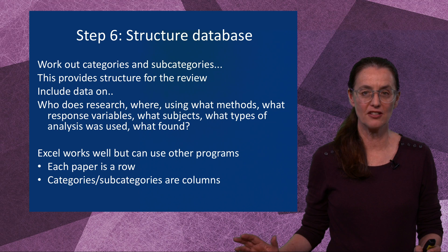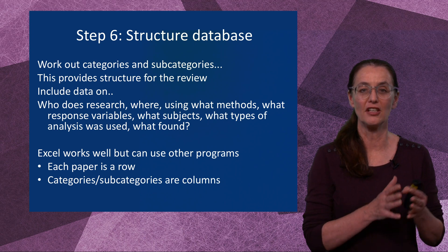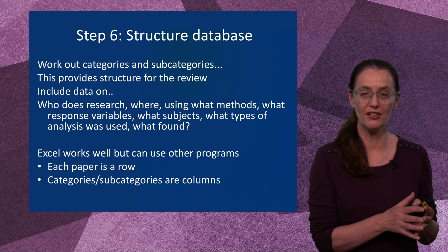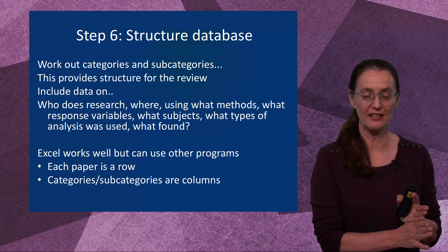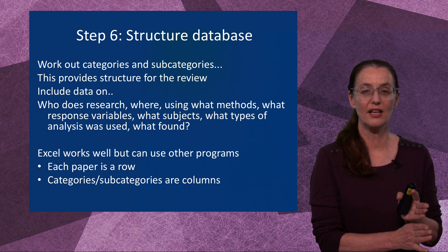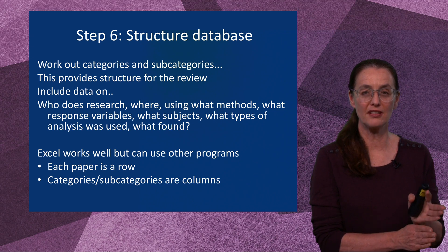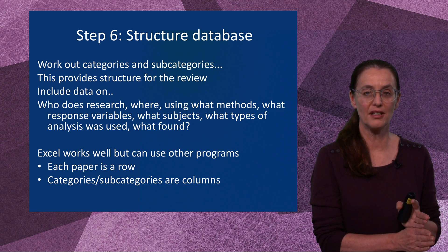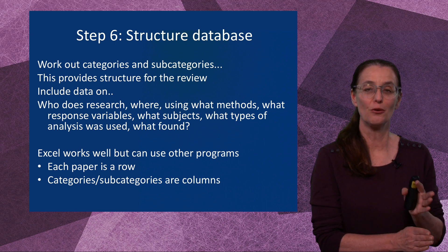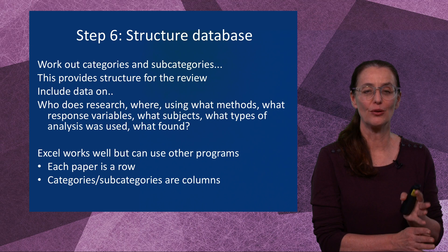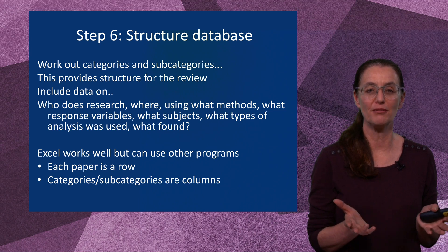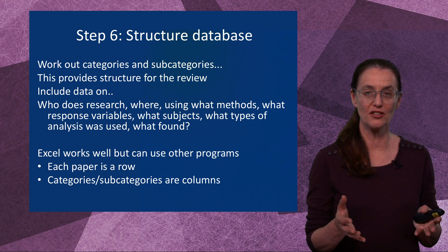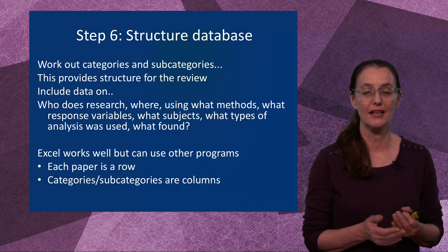The first of those steps talks about structuring the database, and that's about working out the categories and the subcategories. So you've identified the literature that fits your systematic criteria, you've evaluated it and said this is the literature. Now, what is the information you want to gain from that literature when you quantify it? You have to use categories and subcategories to allow you to quantify it, and that provides the structure of the review. Those categories and subcategories have to relate to the research questions — what did you want to find out? So: who does the research, where, using what methods, what response variables, what subjects, what type of analysis was used, and what was found?